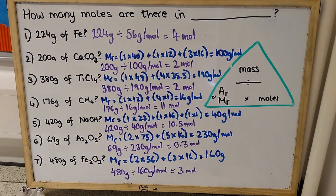So, if we now check your answers for four through seven, you've hopefully worked out that the relative formula mass of methane is 16 grams per mole. And therefore, when we do 176 divided by 16, we get 11 moles.